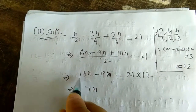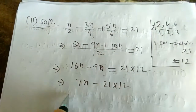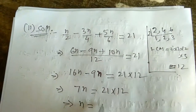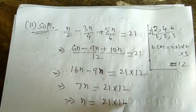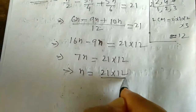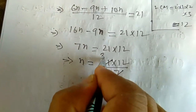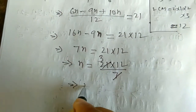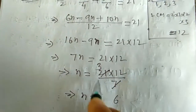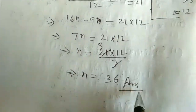So 7n = 21 × 12. Dividing both sides by 7: n = (21 × 12) / 7. Since 21 divided by 7 is 3, we get n = 3 × 12 = 36. So n = 36. This is the answer.